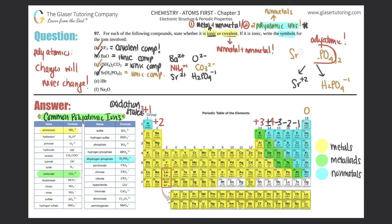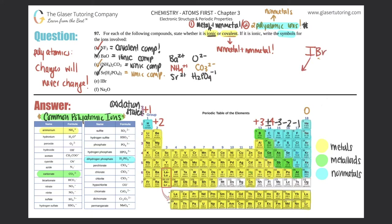For part E, we have IBr — iodine and bromine. Iodine is here on the periodic table and bromine is right above it. Both are non-metals, so this is a covalent compound. For covalent compounds we don't have to give the ions because covalent compounds share electrons — they don't transfer them, so there are no ions.